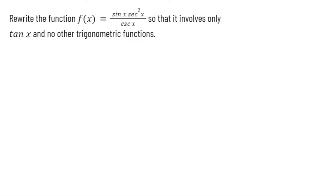In this first example, we are asked to rewrite the function sine x secant squared of x all divided by cosecant of x so that it only involves tangent of x and no other trig functions. Let's use our trig identities to make this happen.